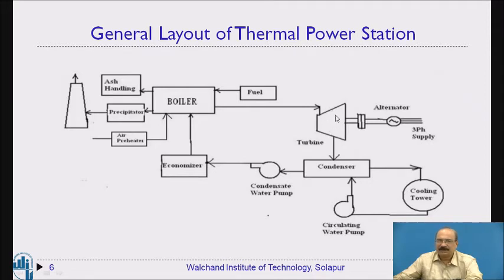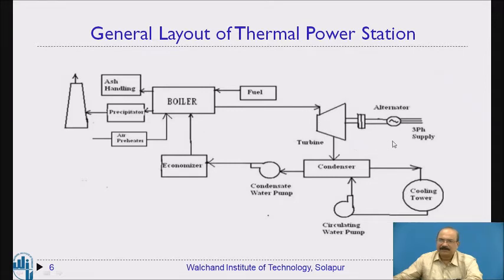The mechanical energy is coupled to the generator, which starts producing electricity. The electricity is then coupled to the power supply units. The electricity reaches our houses or industries. Power production is generally under the central government and power supply to houses or industries comes under the state government — both are separate.